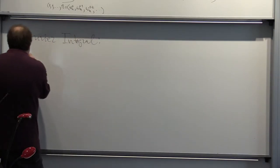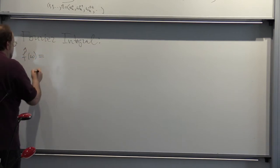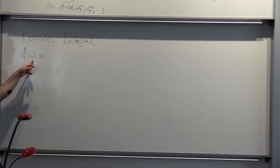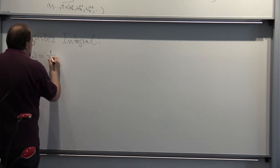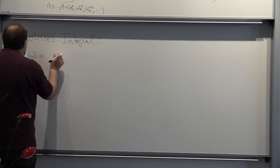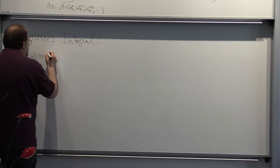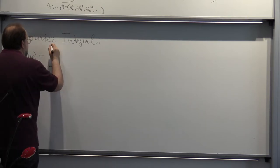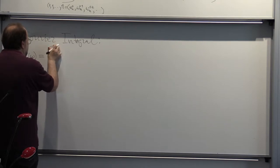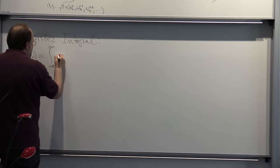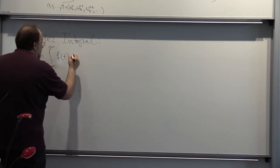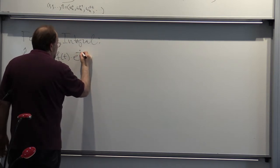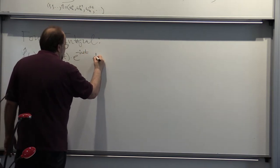So what is the Fourier integral? The Fourier integral, f-hat of ω, is simply the projection of your function onto the frequency equal to ω. This is the integral from minus infinity to infinity of f of t times e to the minus iωt dt.